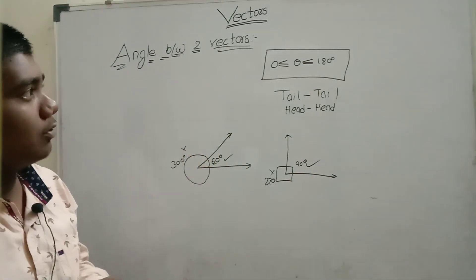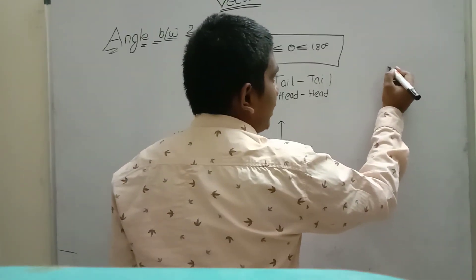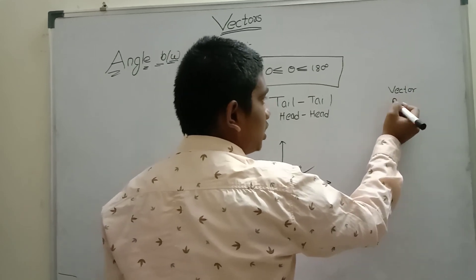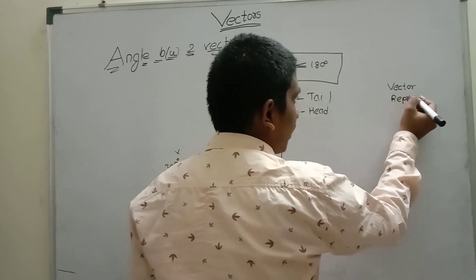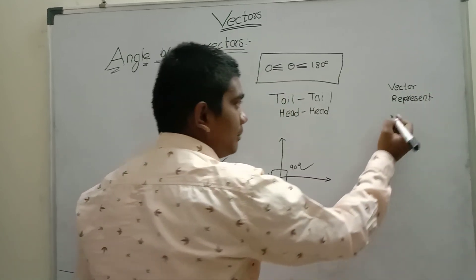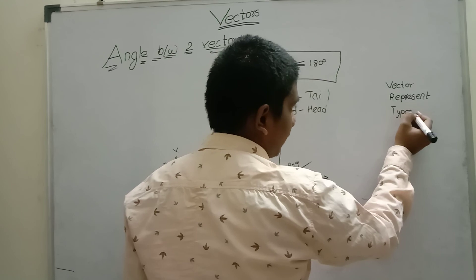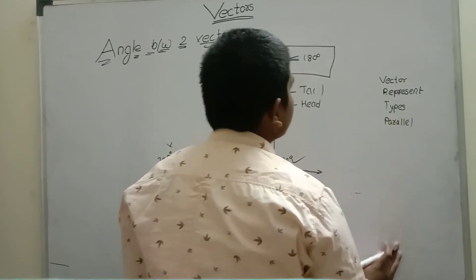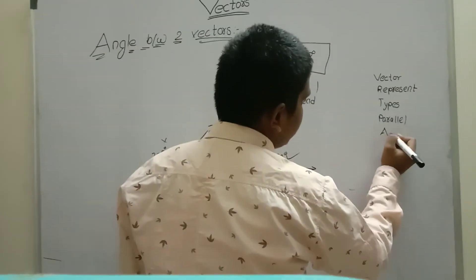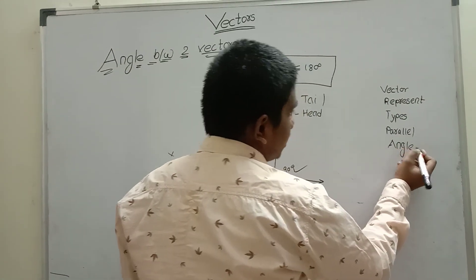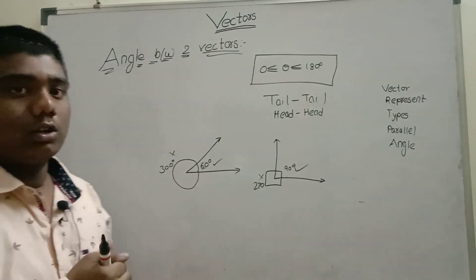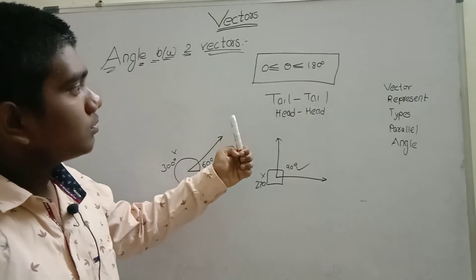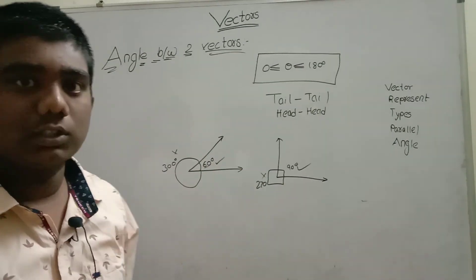So in this video we have learnt: what is a vector, how to represent a vector, types of vectors, parallel shifting of vectors, and how to find the angle between two vectors. These are some of the basic key points most students learn in the vector chapter of 11th standard. Thank you.